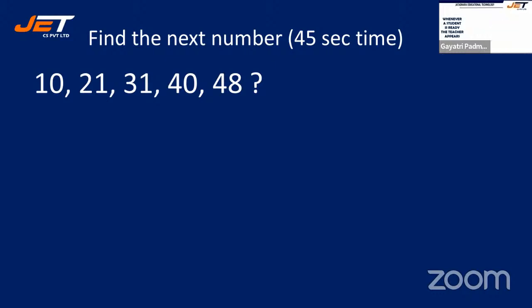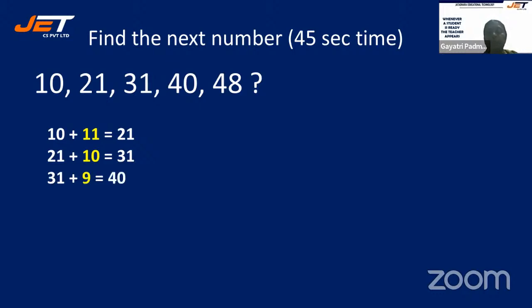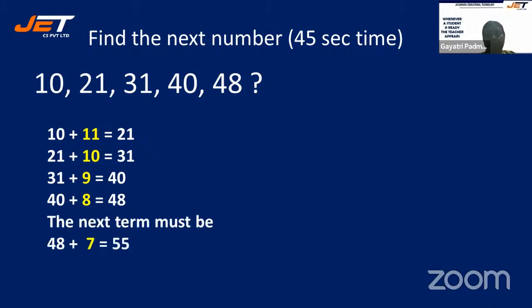Let's see: adding 11 to 10 gives 21. Then the differences decrease: 21+10 gives 31, 31+9 gives 40, 40+8 gives 48. The differences go in decreasing order: 11, 10, 9, 8. So the next number should be 48+7, and the answer is 55.